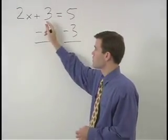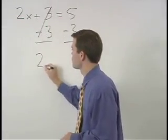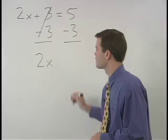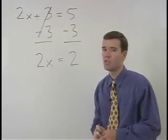On the left, plus 3 minus 3 cancels and we're left with 2x. On the right, 5 minus 3 simplifies to 2.